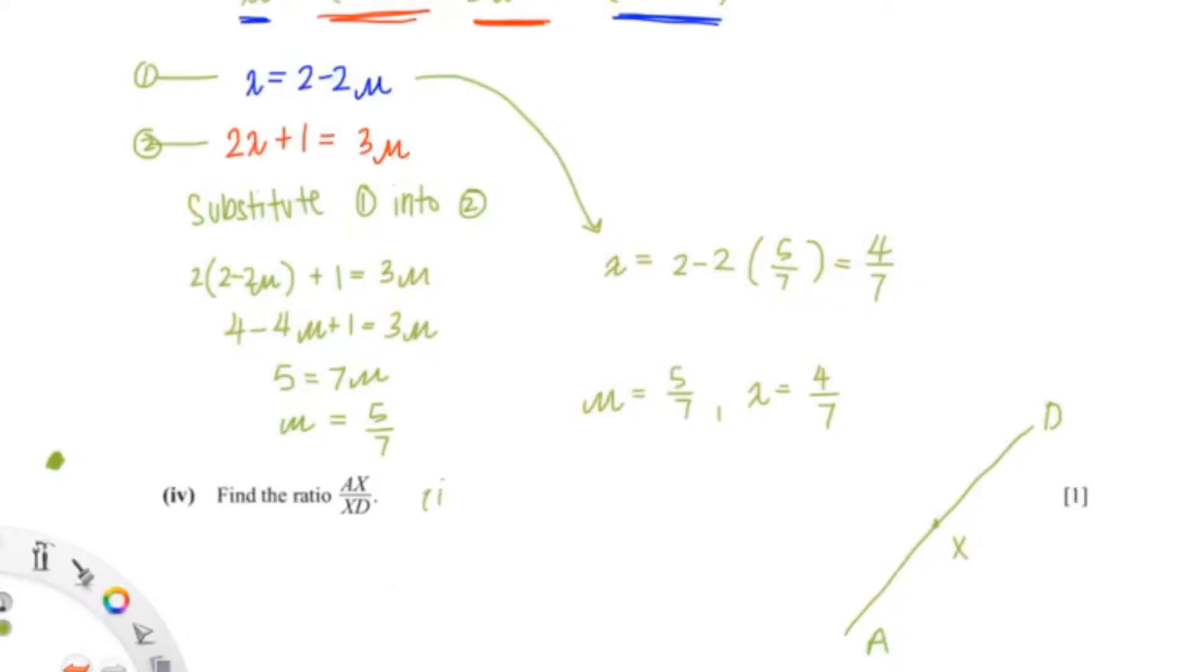So we know that from question 1 it says that AX equals to lambda of AD. Since we already found lambda we can just put that in. So that would be AX equals to 4 over 7 AD.